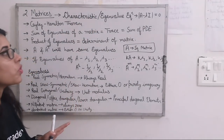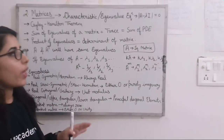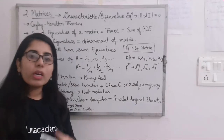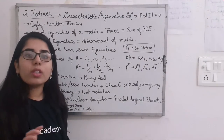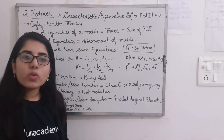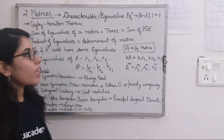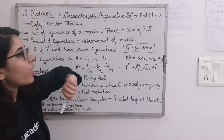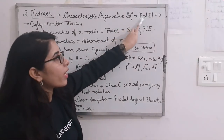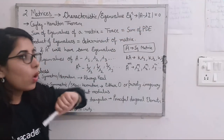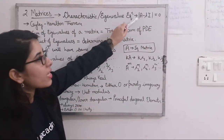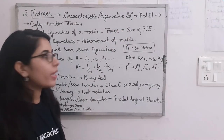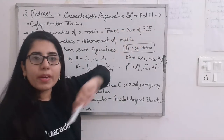You need to know this: whenever you need to find the eigenvalues of a particular matrix, you have to use the characteristic or eigenvalue equation. This equation is: mod(A minus lambda I) is equal to zero. Here, A is the matrix given to you for which you need to find the eigenvalues. I is the identity matrix, whose principal diagonal elements are all one and all other elements are zero.